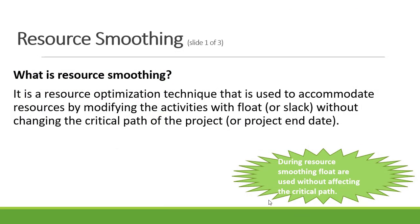Resource smoothing is also a resource optimization technique that is used to accommodate resources by modifying the activities with float or slack, without changing the critical path of the project, and therefore not changing the end date of the project. During resource smoothing, float is used without affecting the critical path of the project.